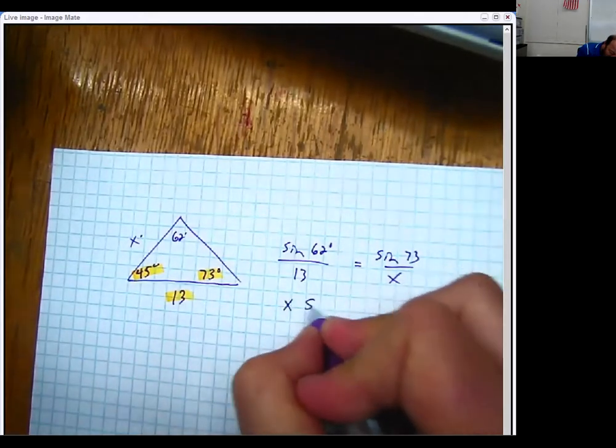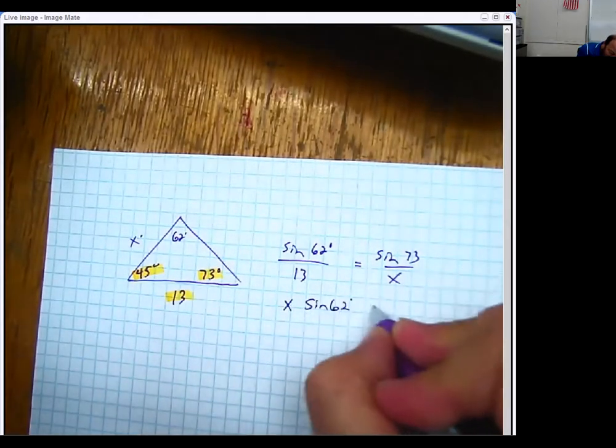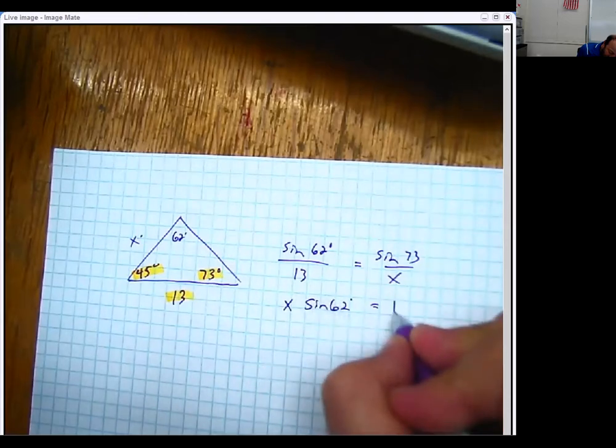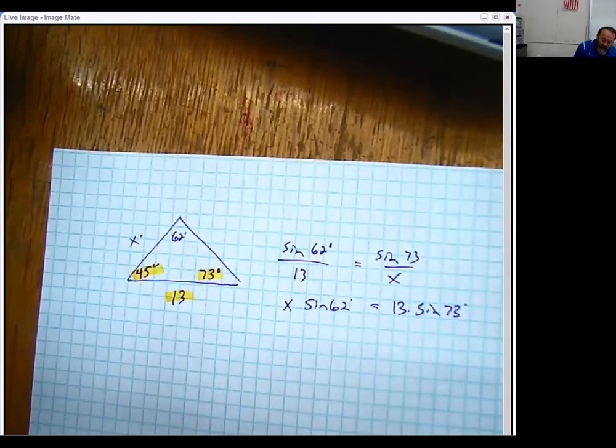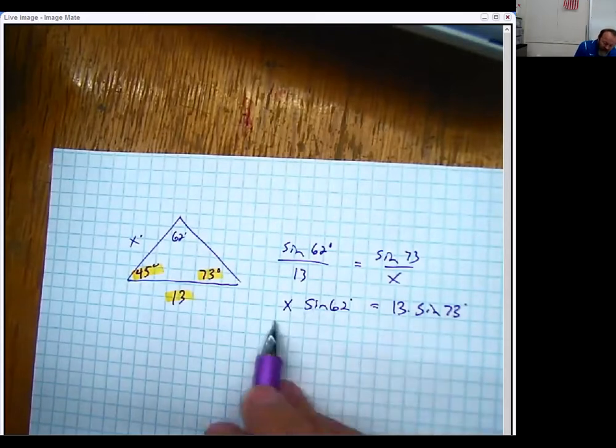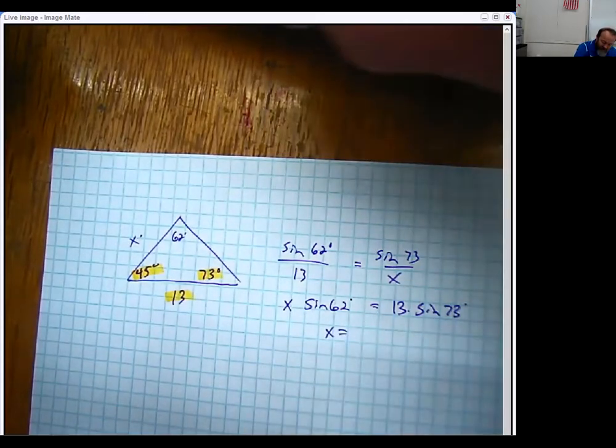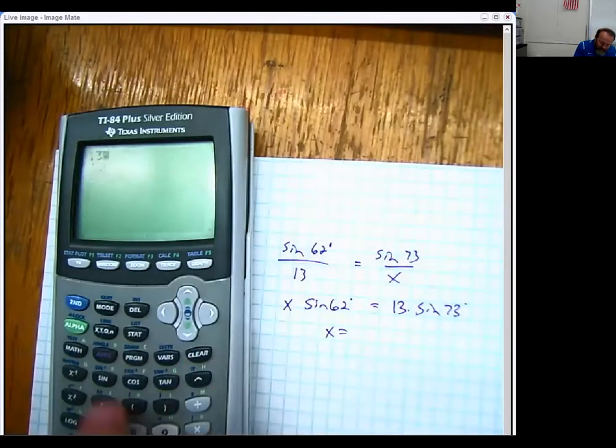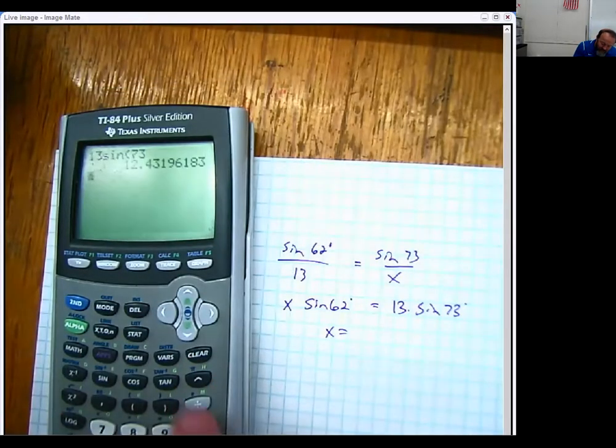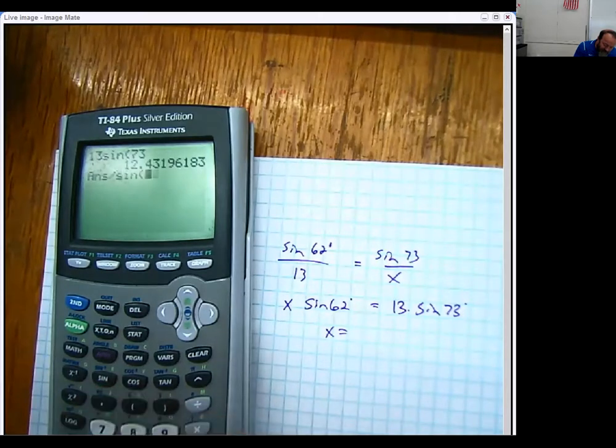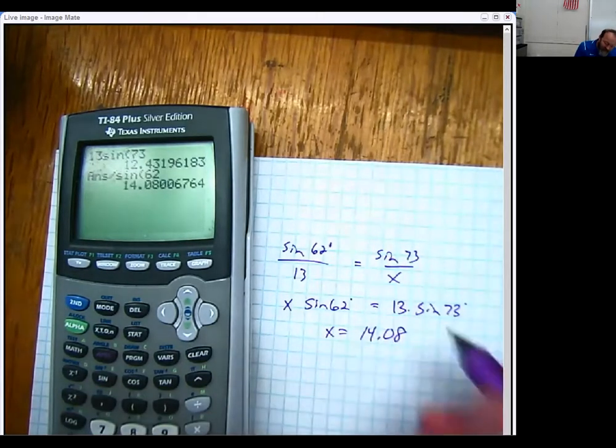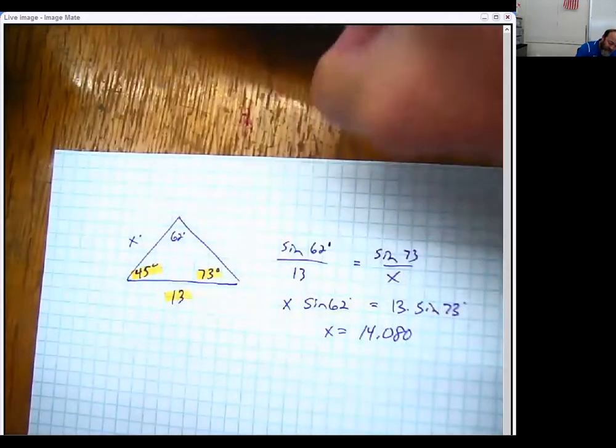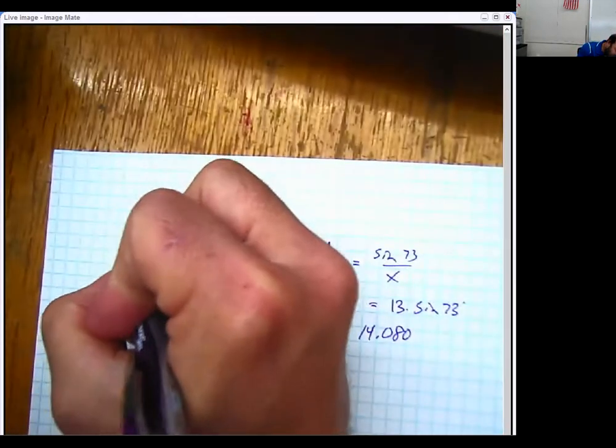If we cross multiply, remember sine of 62 is a number. 13 times the sine of 73 is just a number. So if we took this and this and divided them, we could find out what X is. So let's see, according to my calculator, 13 sine of 73 divided by the sine of 62 looks like 14.08. 14.080. Well, if you look, if I were to call this 14.080,